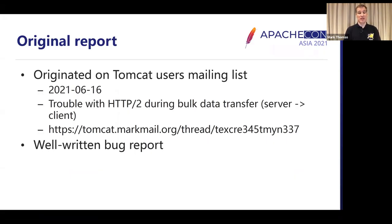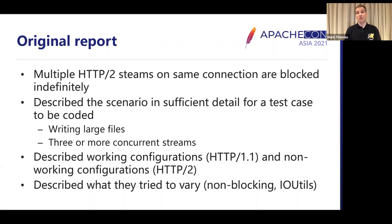This comes from the user's mailing list back in June this year — there are references if you want to go look it up. This was a very well-written bug report. It told us that when there were multiple HTTP/2 streams on the same connection, all those streams were blocked indefinitely. They were blocked indefinitely because they were using an infinite timeout. If they set the timeout to 30 seconds, they were all blocked for 30 seconds and then they ended — essentially blocking until they timeout.